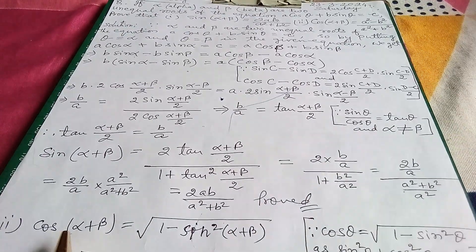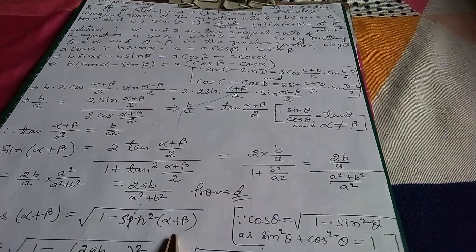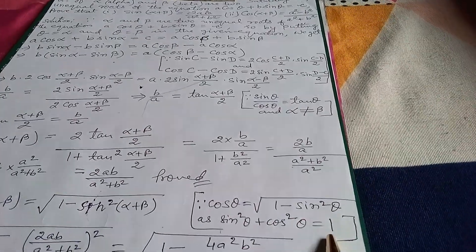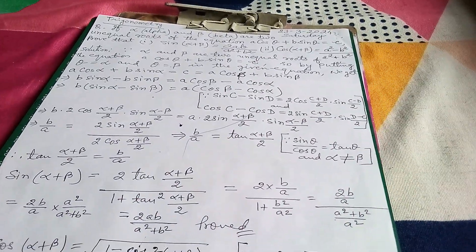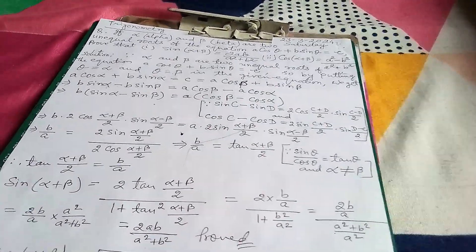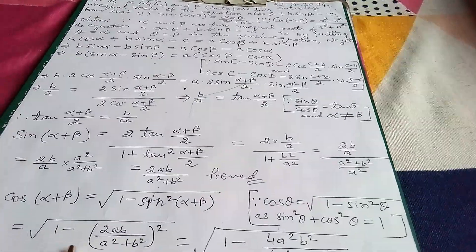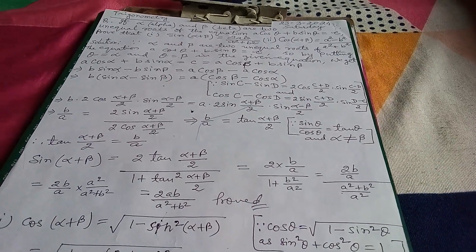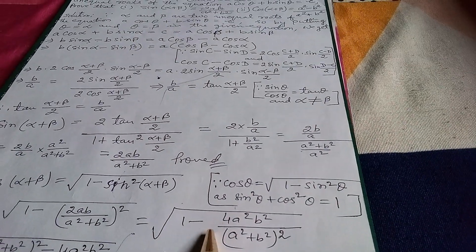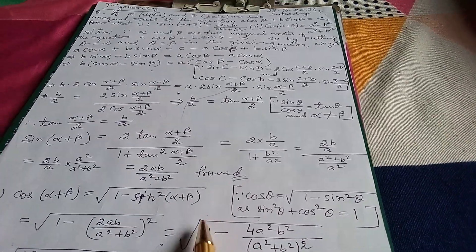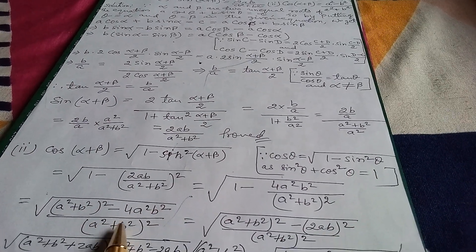For the second part, cos(α+β) = √(1 − sin²(α+β)), since sin²θ + cos²θ = 1, so cosθ = √(1 − sin²θ), where θ = α+β here. Substituting the value of sin(α+β), we get √(1 − (2ab/(a²+b²))²) = √(1 − 4a²b²/(a²+b²)²). Finding the LCM gives √((a²+b²)² − 4a²b²) / (a²+b²).